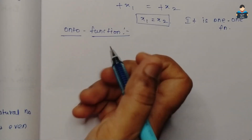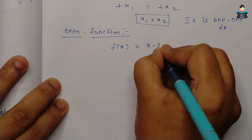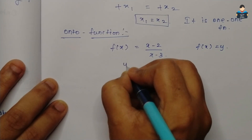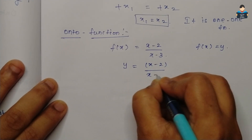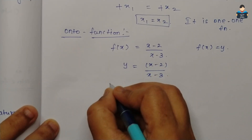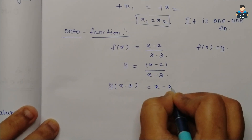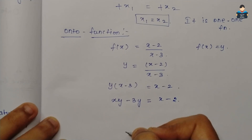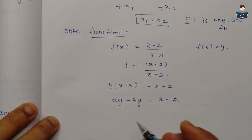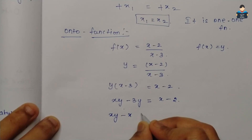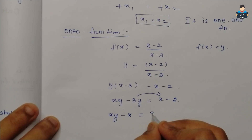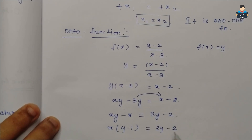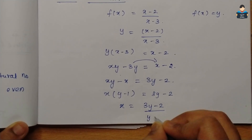For onto, let f(x) = y, so y = (x-2)/(x-3). Cross-multiplying: y(x-3) = x-2, giving xy - 3y = x - 2. Rearranging x terms: xy - x = -3y + 2 + something, so x(y-1) = 3y - 2, therefore x = (3y-2)/(y-1).